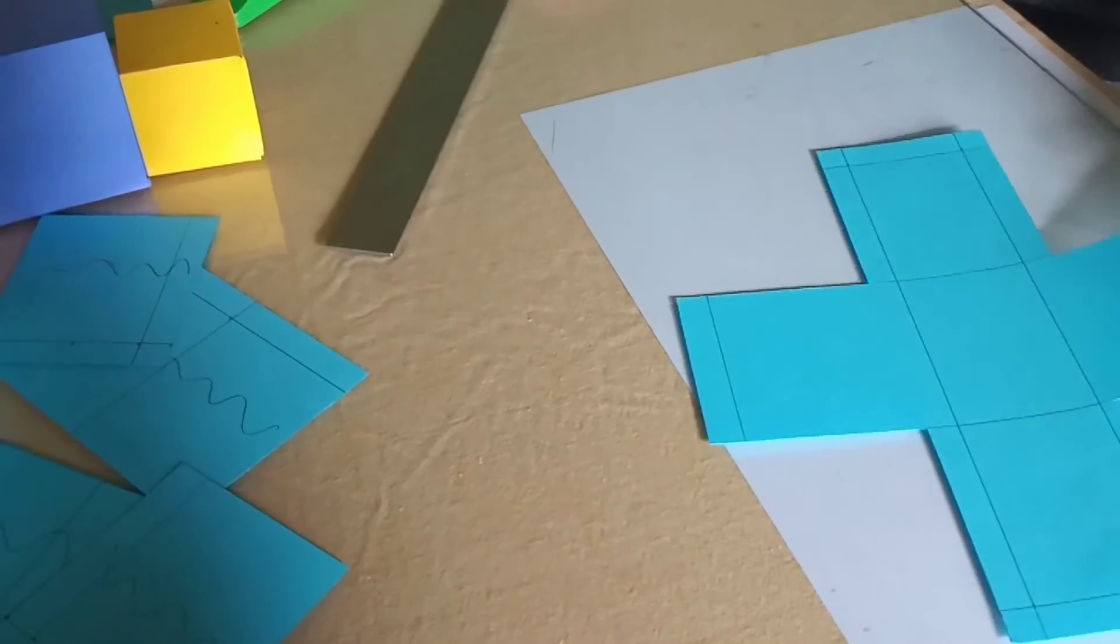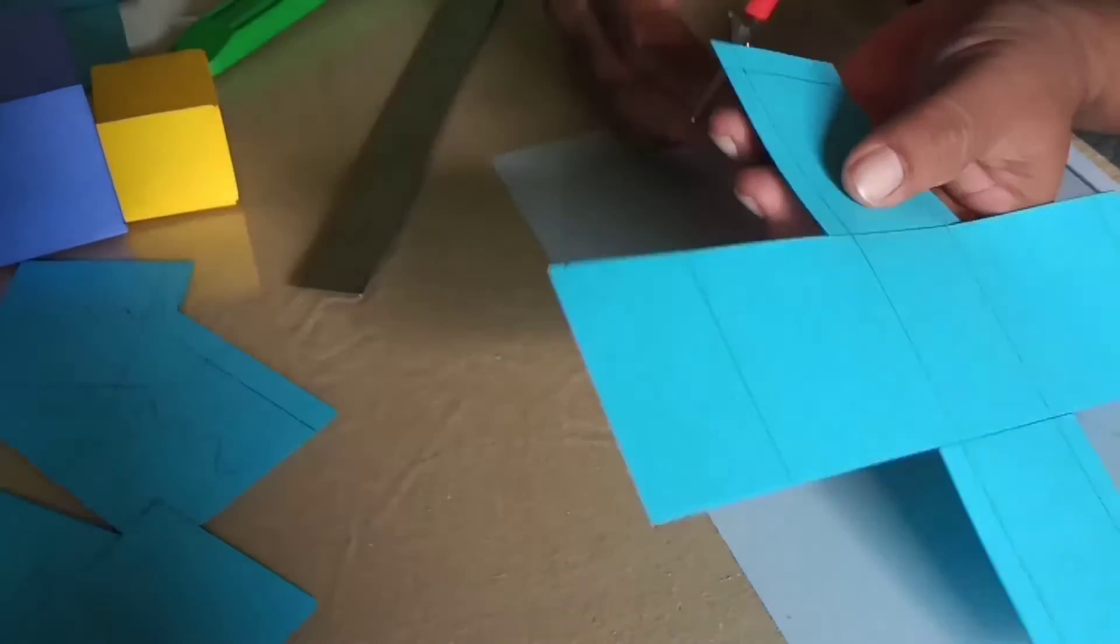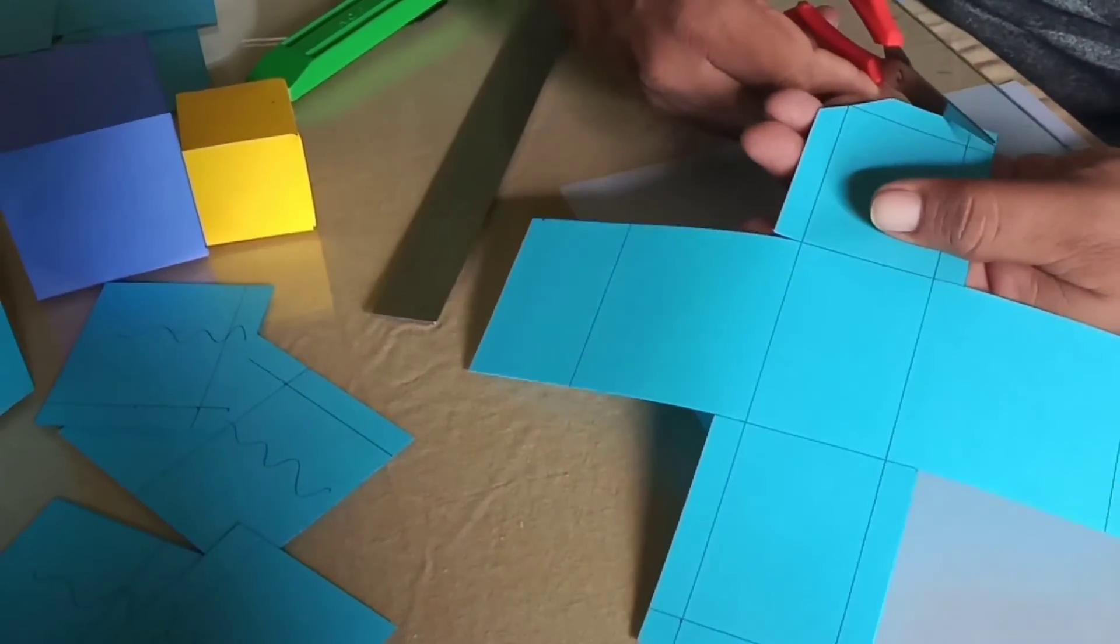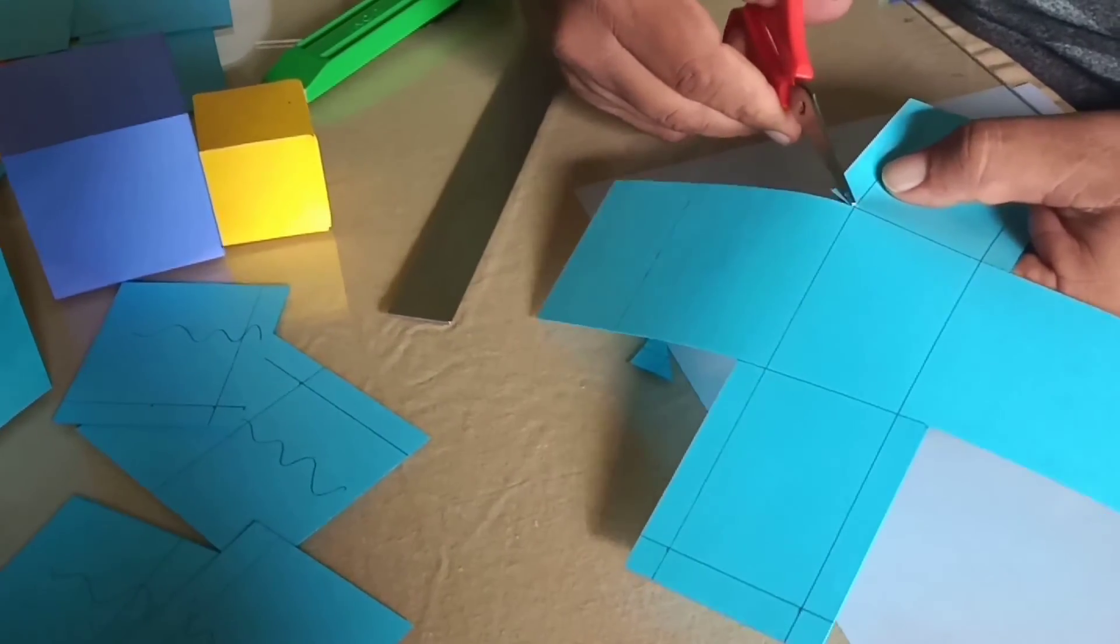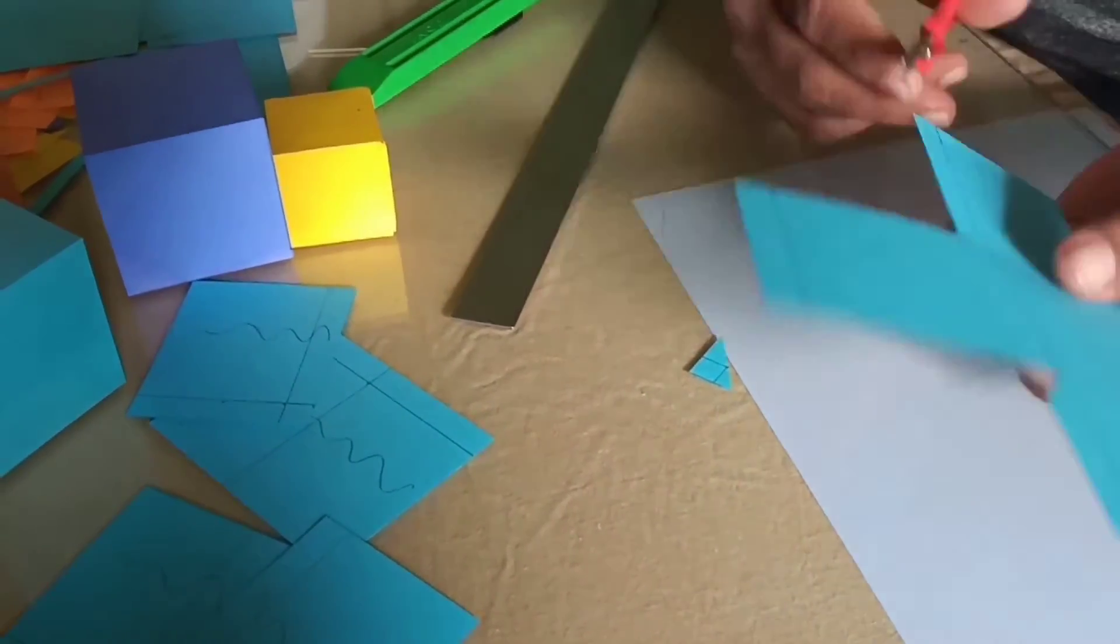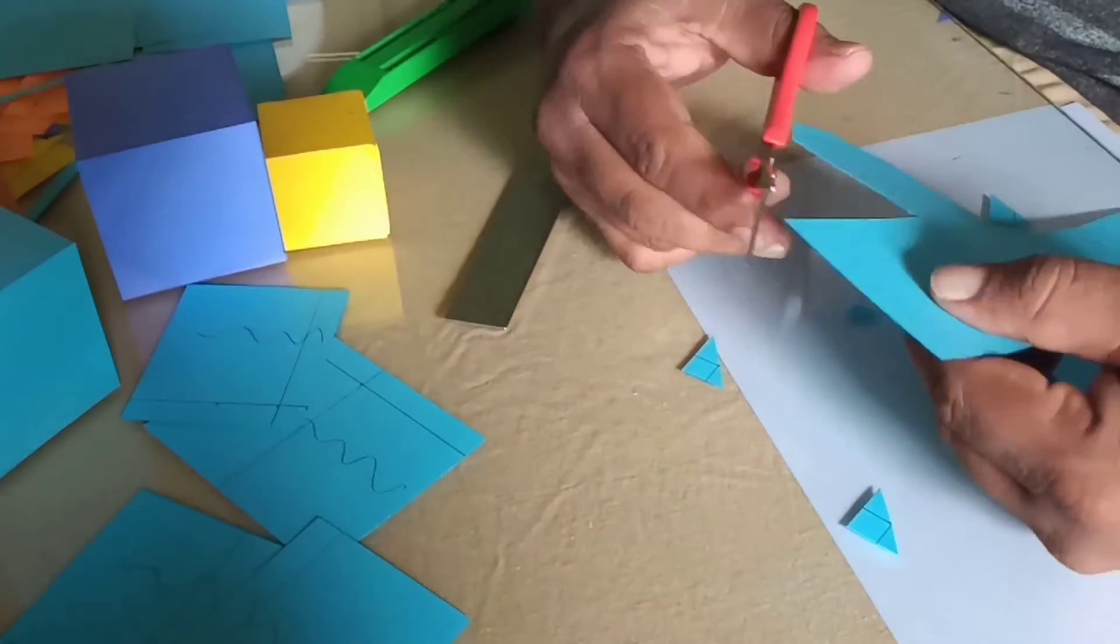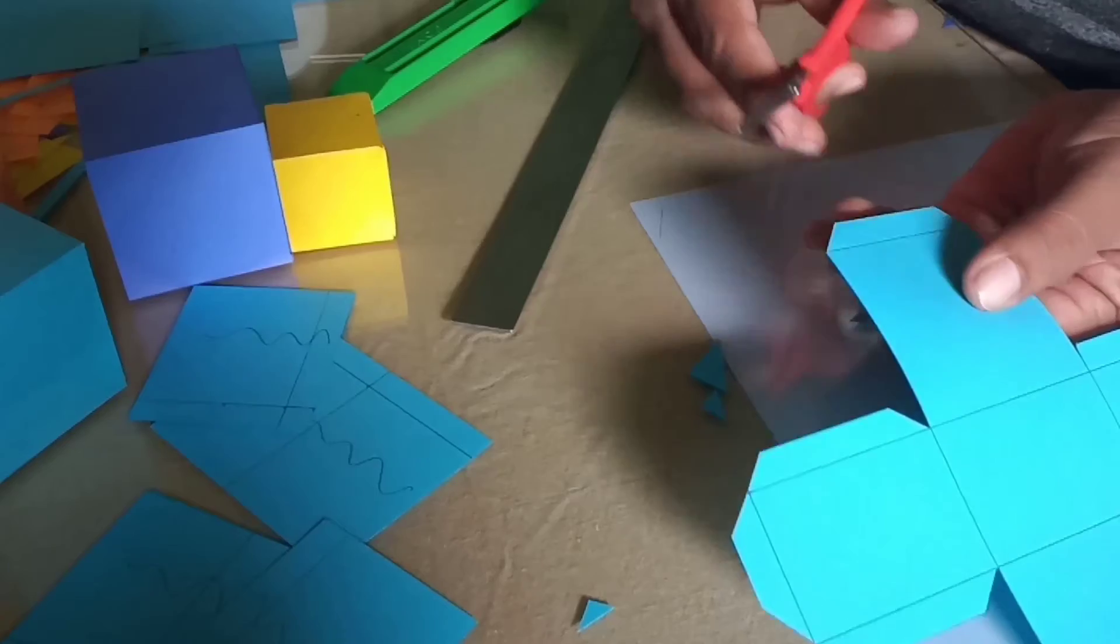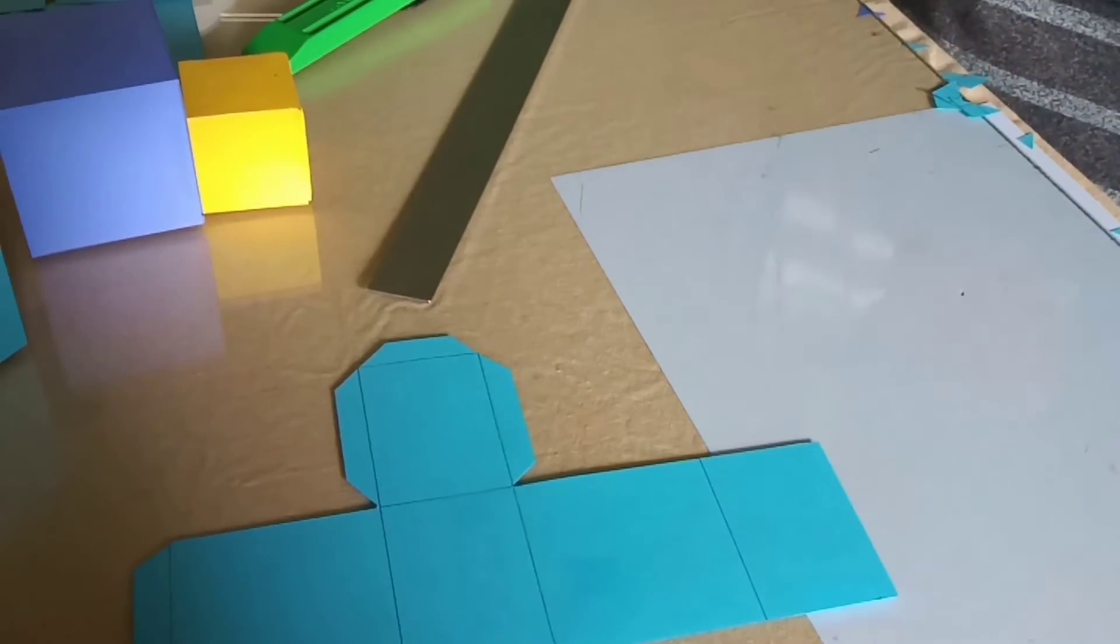Done. Now we use a scissor to cut off the edges of the tabs so that when we are sticking they don't come in the way. So that's it. Now it's ready for sticking. I just showed you how to stick the cube. Now the networks are ready for sticking.